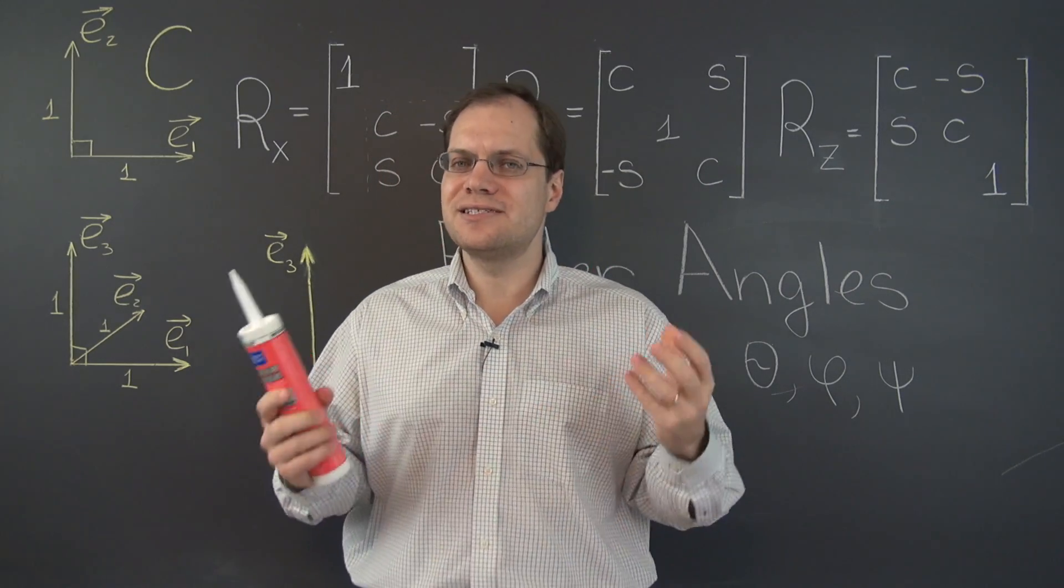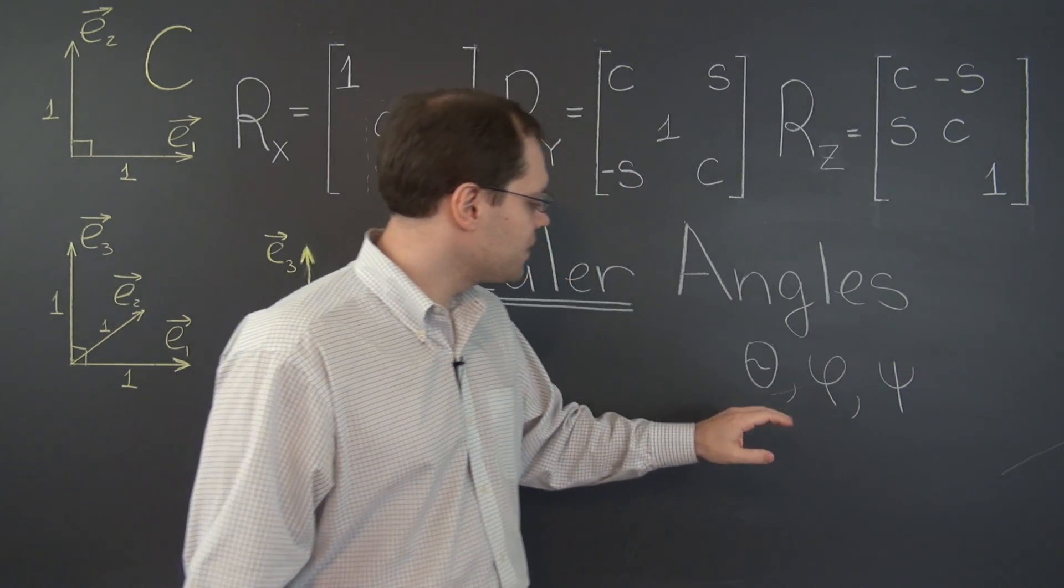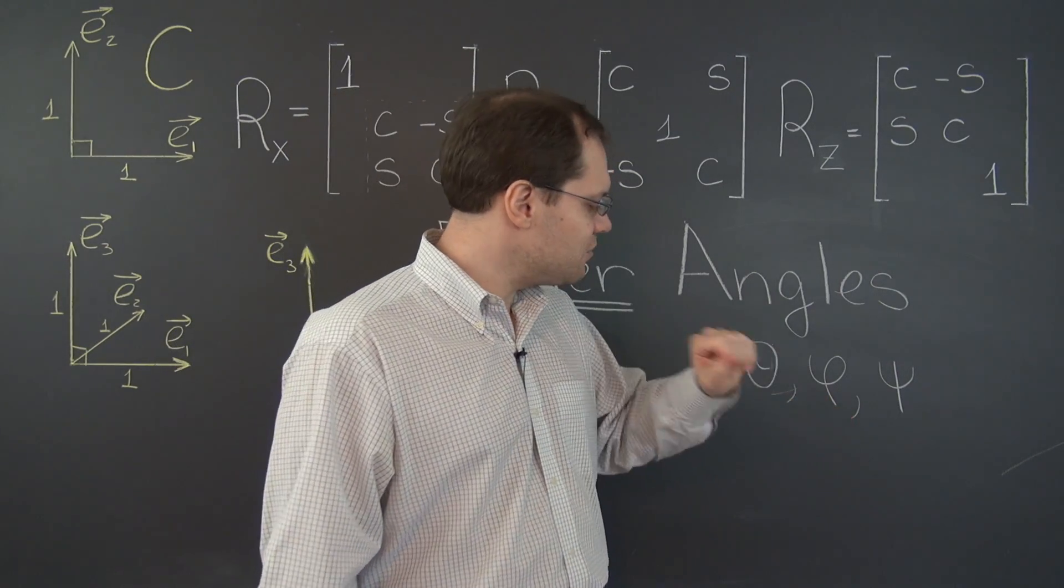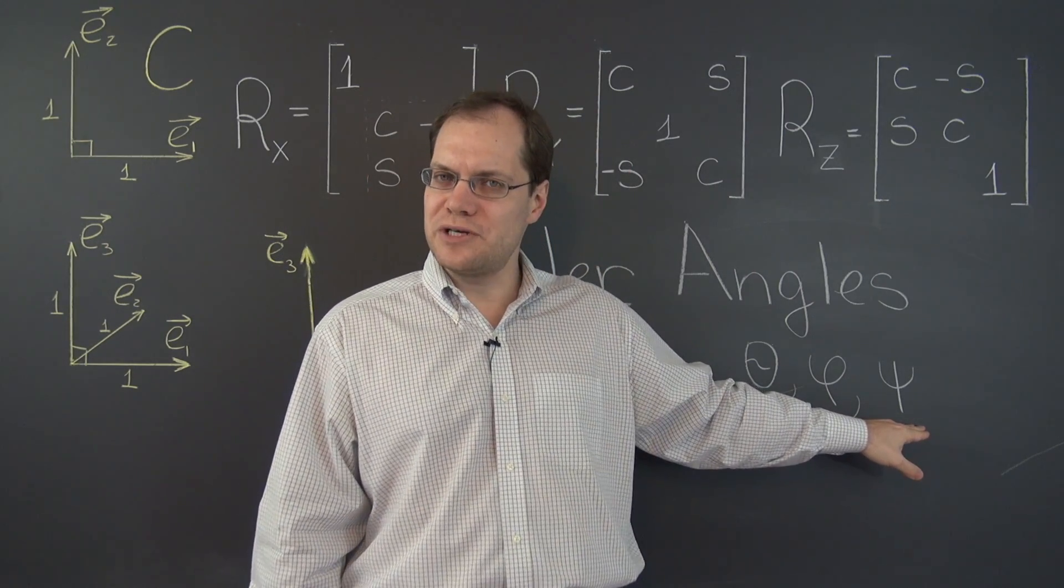And these are essentially the Euler angles. We'll call them theta, phi, and psi. Theta will be responsible for latitude, phi will be responsible for longitude, and psi will be responsible for the amount of twist.